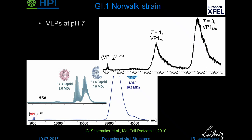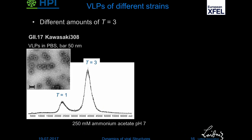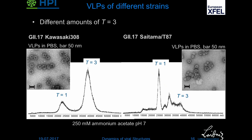Maybe this preparation has one purification step less, we don't know; maybe there is a mutation. If you ask the collaborators, they always say they do it the very same way. We also received different strains and had to look at how they look at neutral pH. This is a G2.17 Kawasaki strain — a very recent strain which caused an epidemic in Japan — and here we also see T=3 and T=1. Some smaller particles are visible in the EM but most are T=3. Then there's another Japanese strain which didn't cause epidemics: we see just a little bit of T=3, some malformed particles, and T=1, as also evident in the EM where you have lots of small particles.